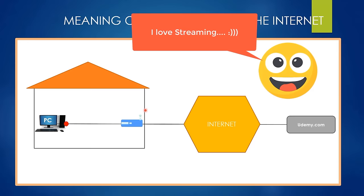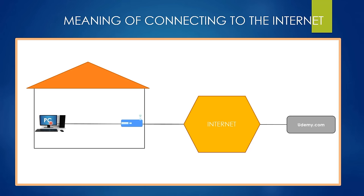Connecting to the internet refers to being able to send some packets to the internet and receive some packets from the internet. The router or home router plays a very important role — it gives the packets received from the computer to the internet, and gives the packets received from the internet to the computer. In summary, packet transmission is the basis of connecting to the internet or communicating with a computer on the other side of the world.